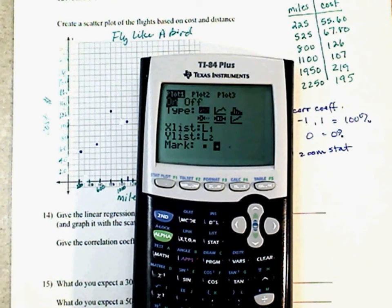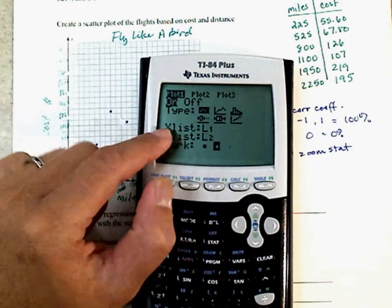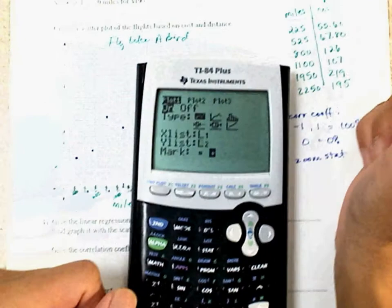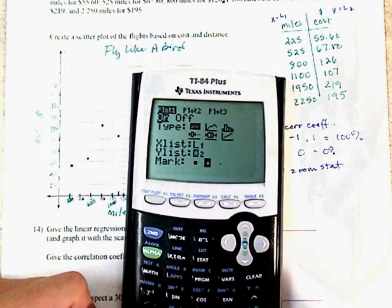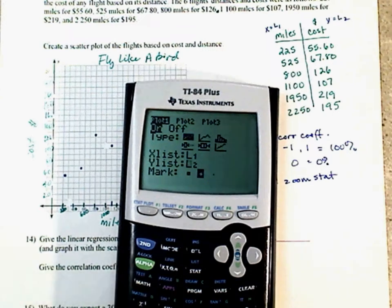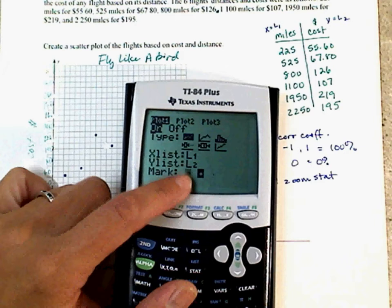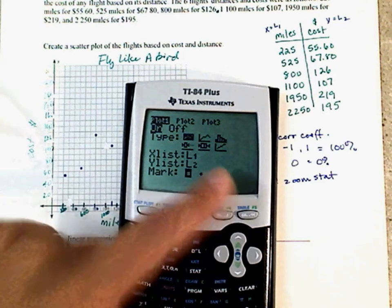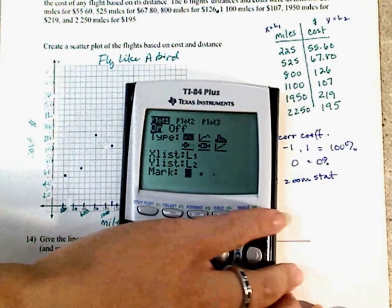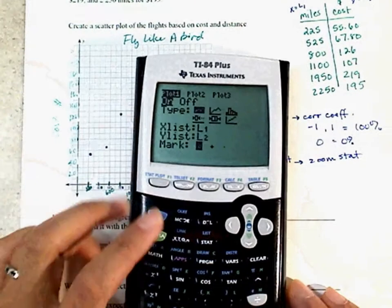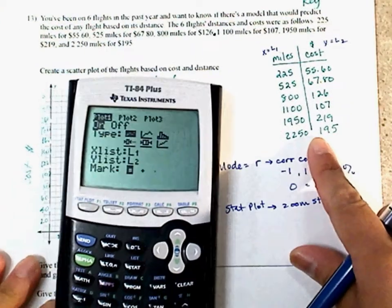Next, you need to turn on your stat plot. What does the stat plot do? The stat plot is going to use the data you give, and when you hit zoom stat, it's going to plot those points for you. Many different ways. So to do that, here's your stat plot. Hit second, stat plot. Mine is off. So we're going to go ahead and turn it on. You see now it's highlighted. We want the scatter plot.